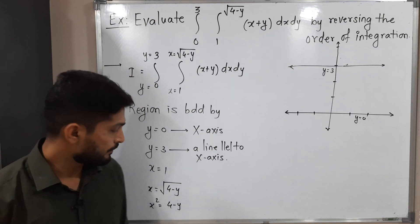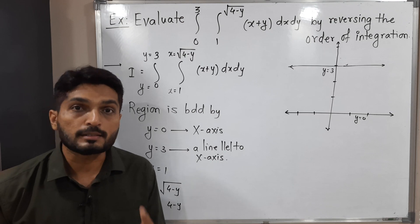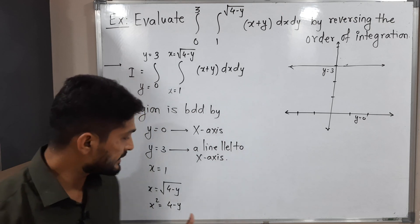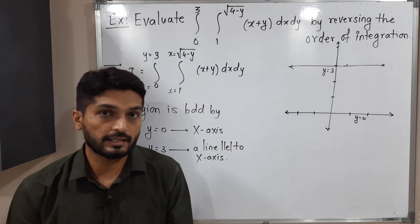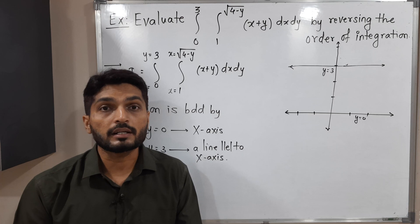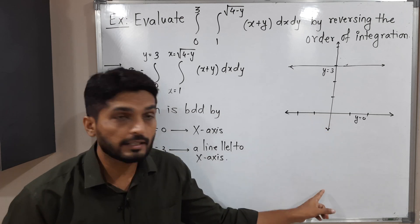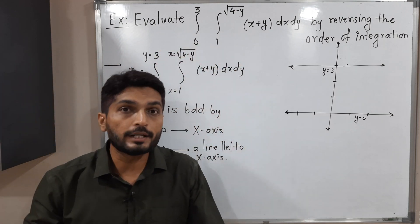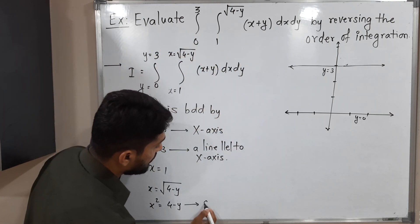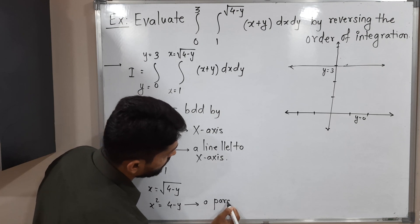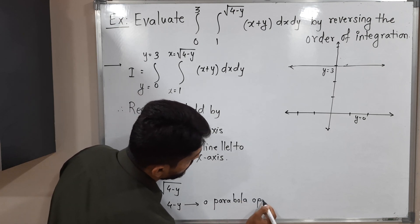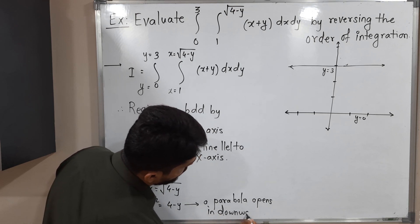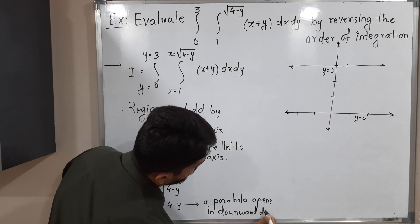Since the power of y is 1, the parabola is symmetric about the y-axis. But y has a minus sign, so we can say the parabola is symmetric about the negative y-axis — or in other words, the parabola opens in the downward direction.